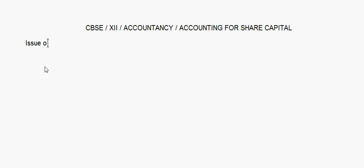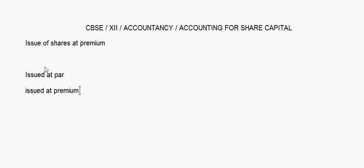Today let's take up accounting for share capital and we'll do issue of shares at premium first. Now whenever shares are issued, the shares can be issued at par, or they can be issued at premium, or they can be issued at a discount.